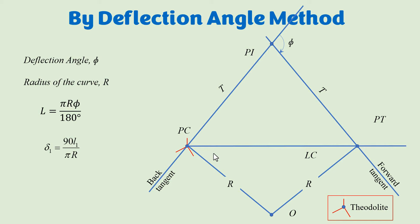Using that formula we can calculate the length of the curve, which is the distance from PC to PT measured along the curve. Once we have the curve length, we can decide the peg interval. The peg interval should be chosen to give the maximum number of points on the curve so that the curvature can be well defined. For example, if the curve length is 100, we might choose a peg interval of 10 to get 10 points.